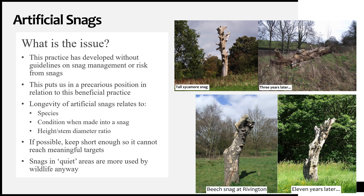Should a significant accident occur due to the failure of an artificial snag that was deliberately created, this practice of leaving dead bits of trees standing up might come into question in a legal judgment. There should be at least some basic rules about how we go about creating these snags in public areas and where they could impact upon targets.